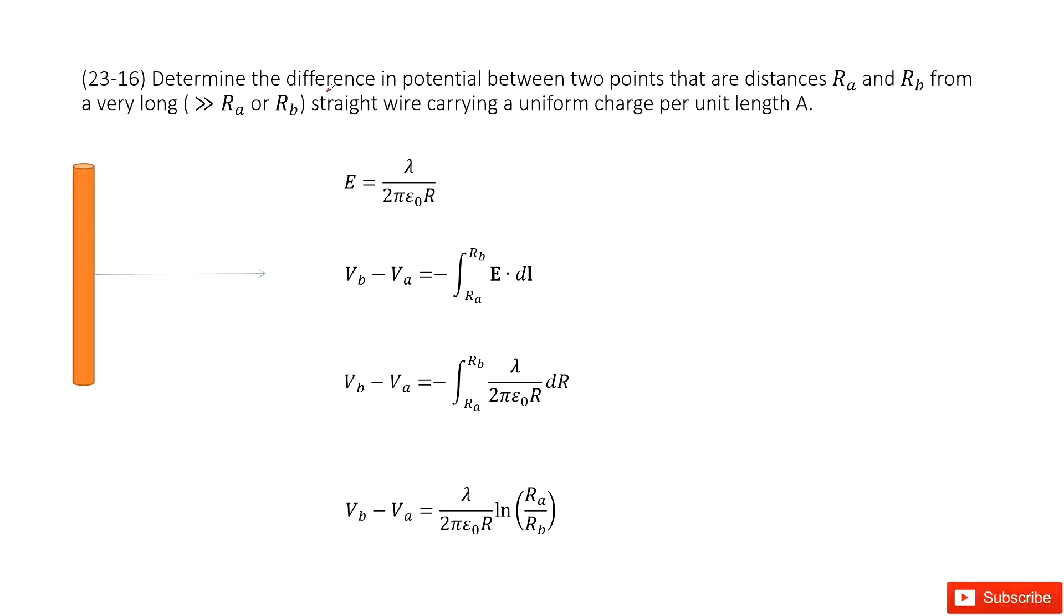We need to determine the difference in potential between two points, Ra and Rb. So this one we call Ra, and this one we call Rb.